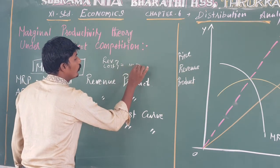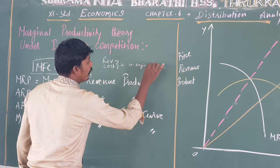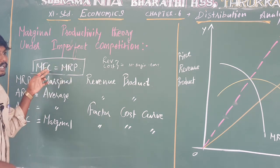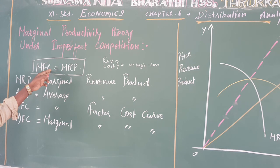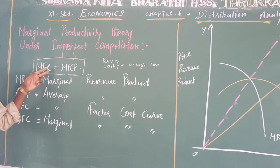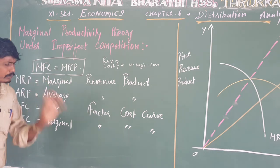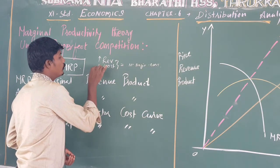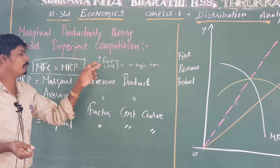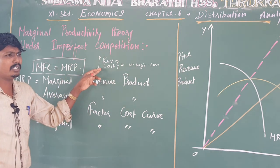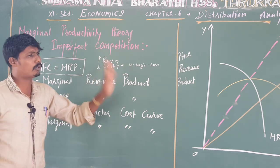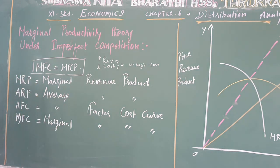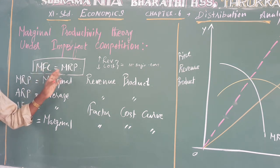Under imperfect competition, we look at the conditions of no profit and no loss, as well as maximized profit. Revenue is increased and cost is reduced to maximize labor and maximize profit. This involves the relationship between MFC (Marginal Factor Cost) and MRP (Marginal Revenue Product).